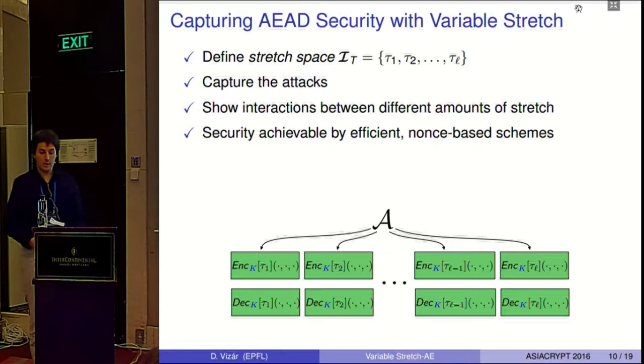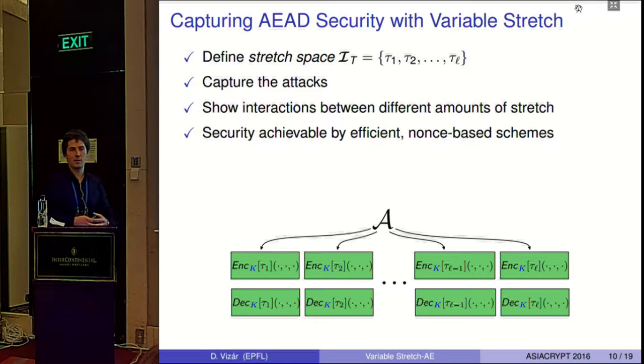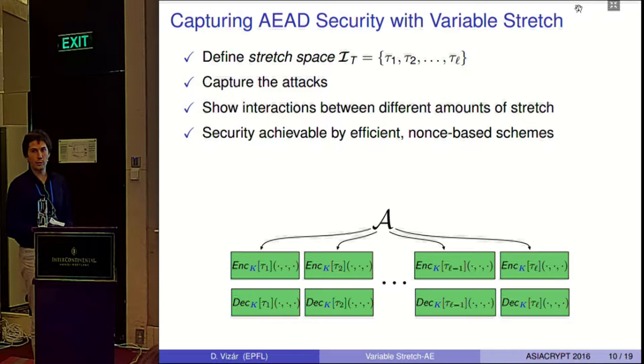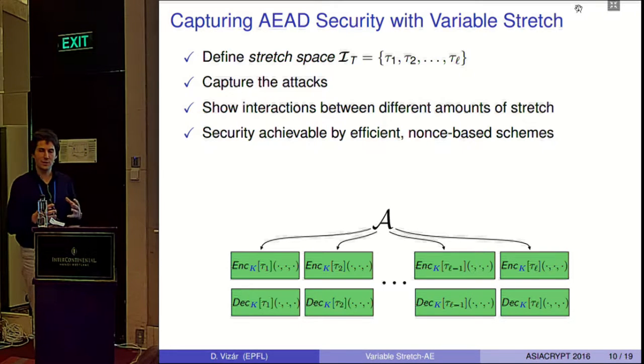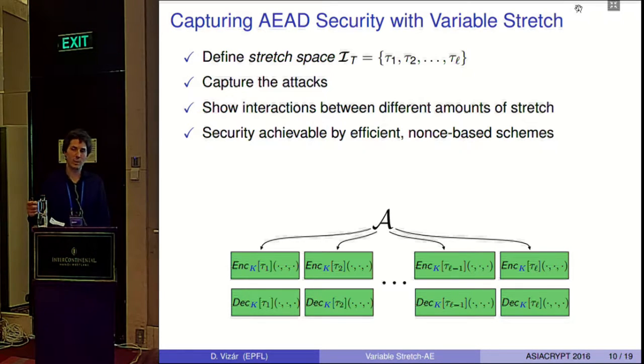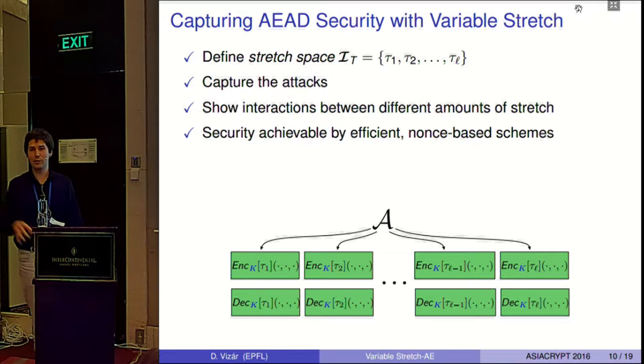When we start and want to formalize security of authenticated encryption with variable stretch, there are some pretty intuitive properties that we would like to see from our new notion. Clearly, there will be some space of possible stretches that our adversary can work with. What we want is that the previous attacks will be captured in the new notion as valid attacks. We want to show if there are any interactions between different values of stretch, we want these to appear in the advantage. At the same time, we would like that the security level that would be captured by the new notion can still be achieved by efficient schemes, nice and efficient, like we know from the basic nonce based AEAD.